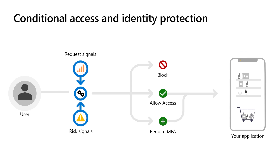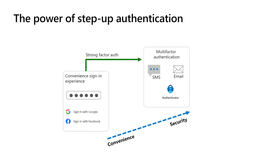Managing access is critical for external-facing applications. Microsoft Entra Conditional Access and Identity Protection safeguard identities by enforcing access policies that respond to various risk levels. Real-time risk assessment determines the necessary actions, such as requiring multi-factor authentication or blocking access altogether, ensuring that only legitimate users can access your application. Microsoft Entra External ID offers step-up authentication that adjusts conditional access policies according to user activity — for example, when a user accesses a sensitive part of your application, they are prompted for additional credentials like phone or email verification.